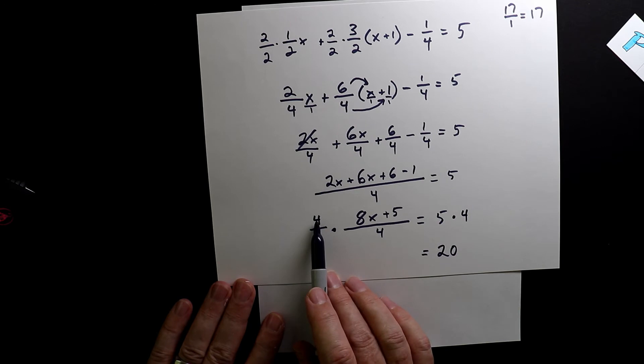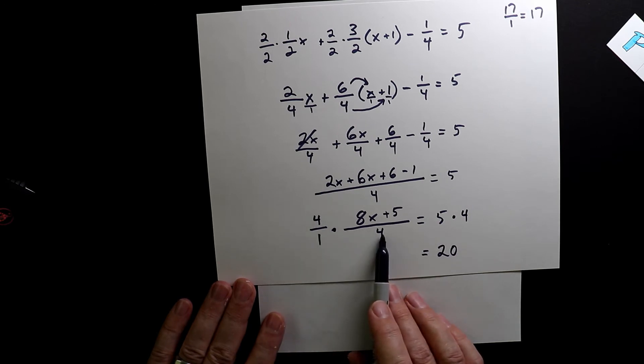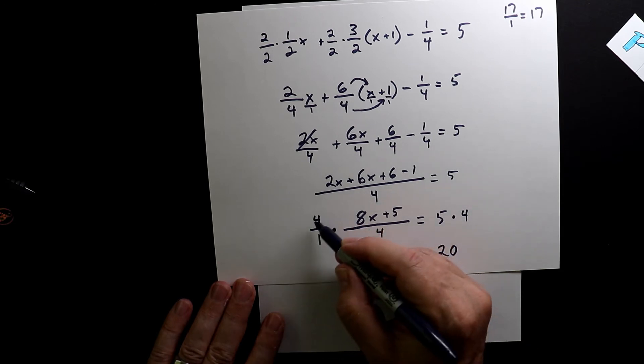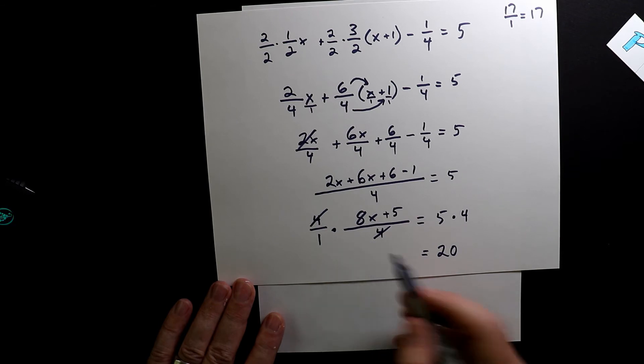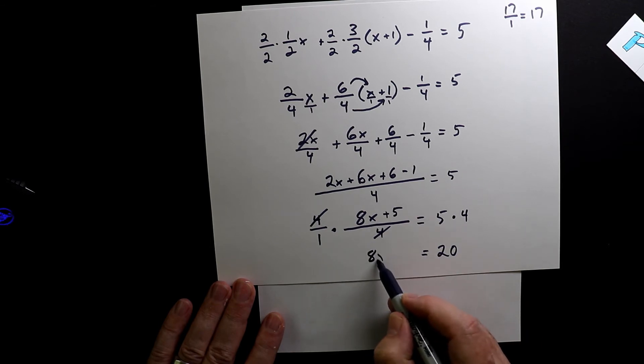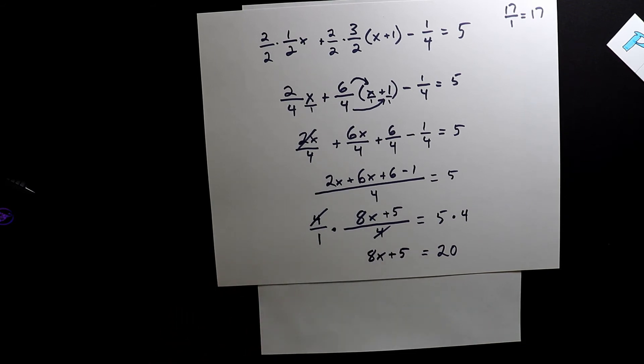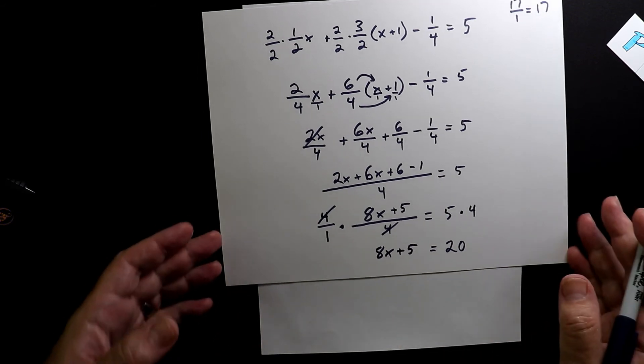So instead of writing four as a fraction here, I'm just going to write it like this because I want to make these fractions go away. So everyone knows that five times four is 20. Now here, if you have a four on the top and a four on the bottom, you can make them go away. And all we're left here now, since this has all been simplified to one, we don't have to worry about the denominator anymore. All we're going to do is just bring down the numerator here, which is 8x plus five.